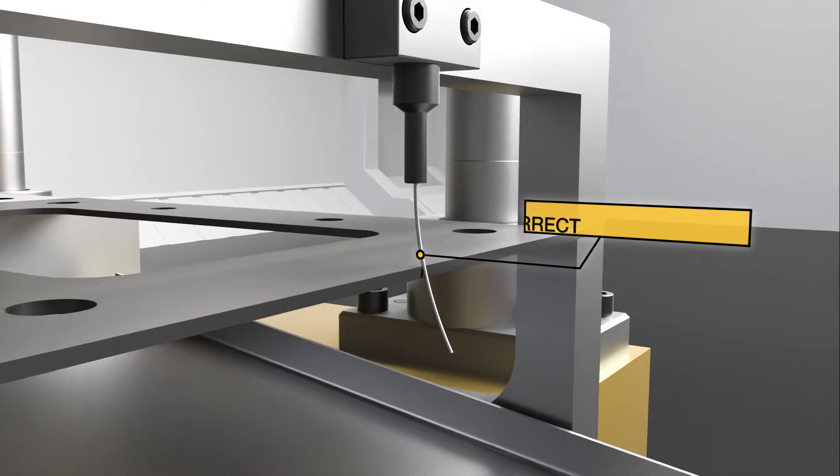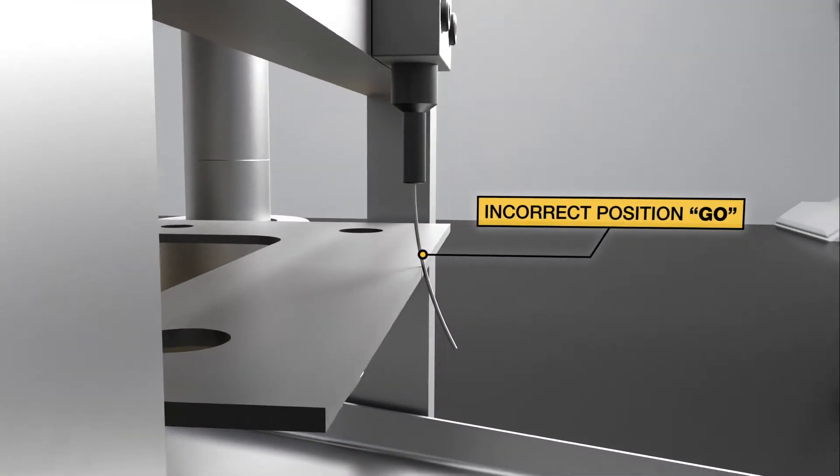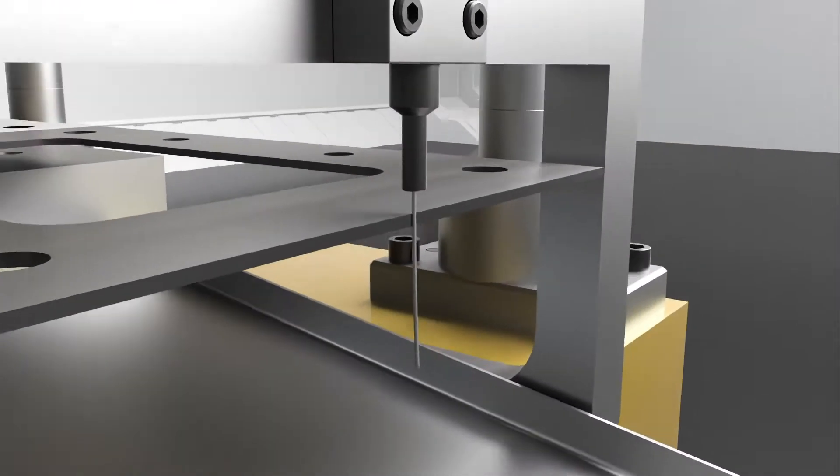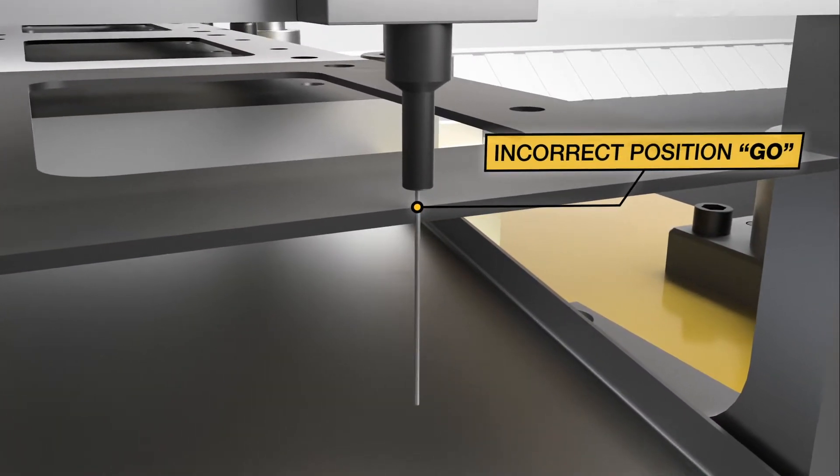If the workpiece is fed long, the go signal is still sent to the press. If the workpiece is in a high position, the go signal is also sent to the press.